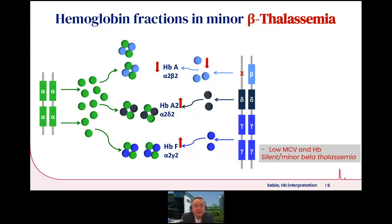In beta thalassemia, we have fewer beta genes — there are two — and one could be reduced in expression or deleted, resulting in fewer beta chains. Always think about the pairing of globin chains: if one is reduced, the corresponding chain becomes relatively increased. In beta thalassemia, there is reduced hemoglobin A, more free alpha chains available to pair with other globins, increased hemoglobin A2, and increased hemoglobin F. Clinically, this presents with low MCV and low hemoglobin — this is silent or minor beta thalassemia.